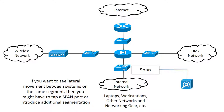So, if I have a sensor located at this location watching this internal network, I'm not going to see internal systems talking to each other. Because I'm only able to see north-south traffic here. Now, if I span something on this switch such that I can see traffic among internal systems, and then I send that span traffic to that sensor, I could see lateral movement, potentially. There's going to be a lot of traffic, but that might be what you decide is important to do.